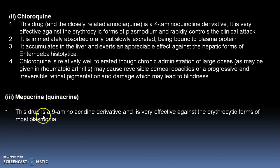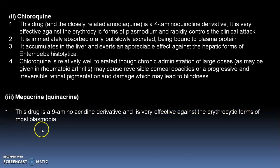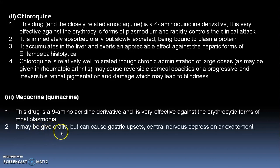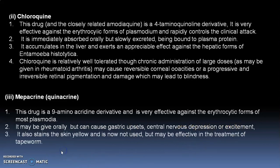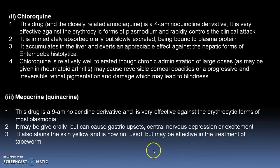Mepacrine is a 9-aminoacridine derivative; it is very effective against the erythrocytic form of most Plasmodia. It may be given orally but can cause gastric upset, central nervous system depression or excitement. It also stains the skin yellow and is not now widely used, but may be effective in the treatment of tapeworm.